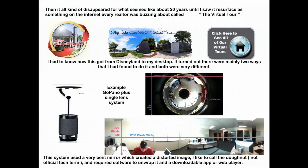They kind of disappeared for a while, and I grew up, started making movies and visual effects. It wasn't around for me for about 20 years or so, until I saw it resurface on the internet as something every realtor was buzzing about — called the virtual tour. I started getting into it, thinking that's like that old movie I saw back in Disneyland. How is this being done? How is it on my desktop now? It turned out there were mainly two ways that I found to do it, and they're both very different.